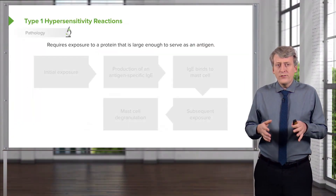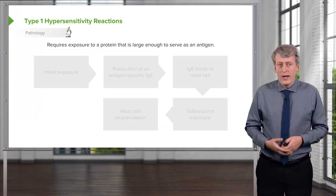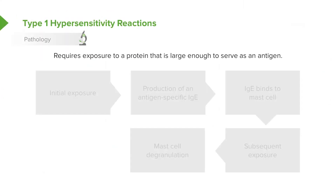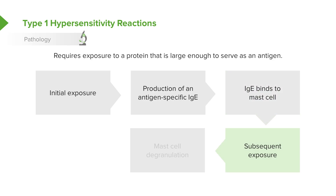Let's start with type 1 hypersensitivity reactions. In general, these require exposure to a protein that's large enough to be an antigen. The patient has an initial exposure to that antigen and produces an antigen-specific IgE. That IgE then binds to a mast cell, and on a subsequent exposure to that antigen, they generally have a generalized mast cell degranulation resulting in a type 1 hypersensitivity reaction.